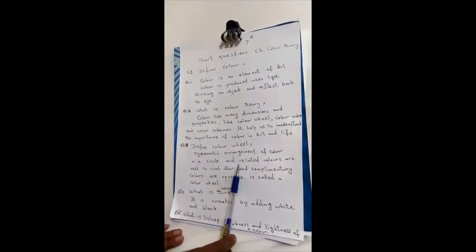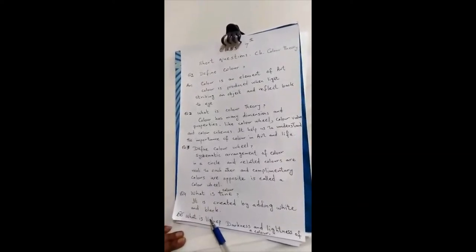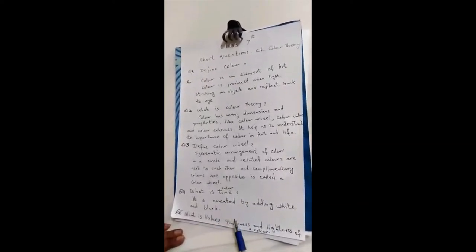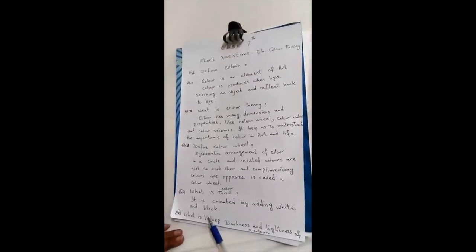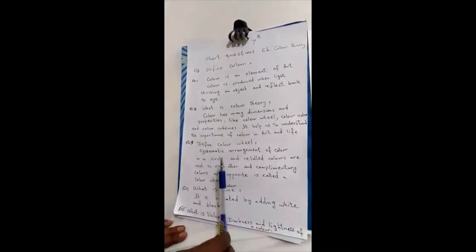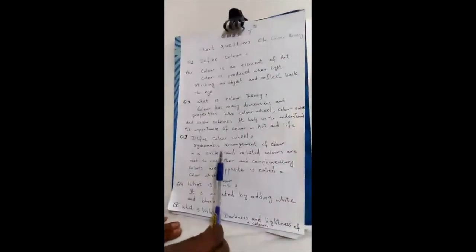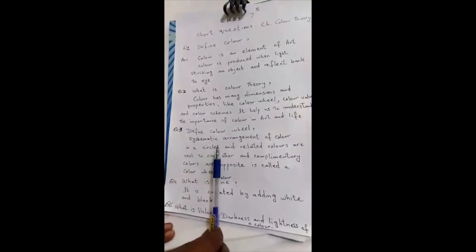And also the picture of value - how you will describe the darkness and lightness in the picture, in the drawing. Or you can take the guidelines from the book also, because that is given in your book. Thank you.